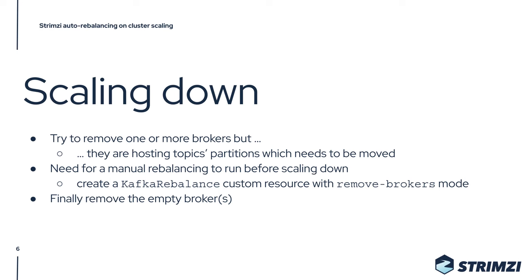The same applies for scaling down. When you want to remove one or more brokers that are hosting topic partitions, Streams can block you from doing so to avoid replicas going offline and impacting high availability. So you first have to move partitions off the brokers you want to remove by running a manual rebalance — using the Kafka rebalance custom resource with the remove-brokers mode — and then you can scale down the cluster.